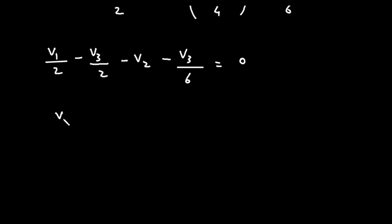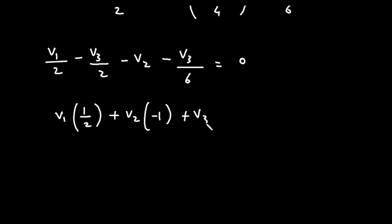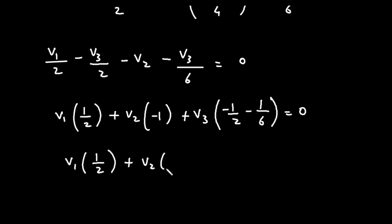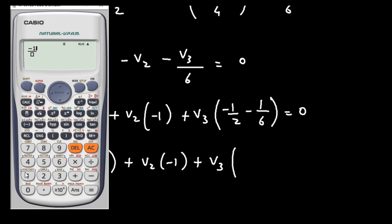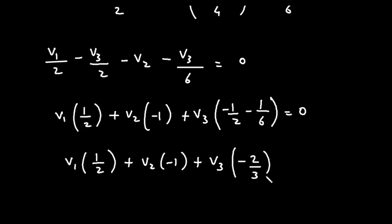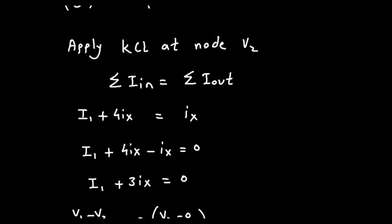Collecting terms: V1(1/2) + V2(−1) + V3(−1/2 − 1/6) = 0, which simplifies to V1(1/2) − V2 − V3(2/3) = 0. Let's call this equation number 3.